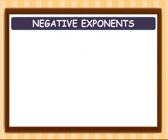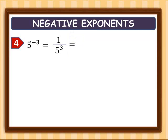Example four: five raised to negative three. This is the same as one over five cubed. Simplifying, five cubed is 125, so five raised to negative three is equivalent to one over 125.